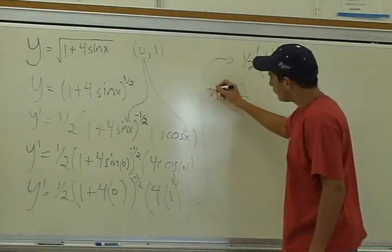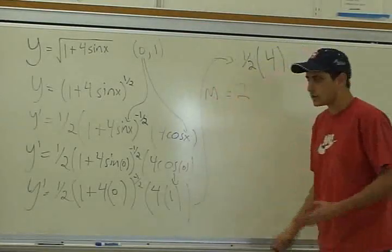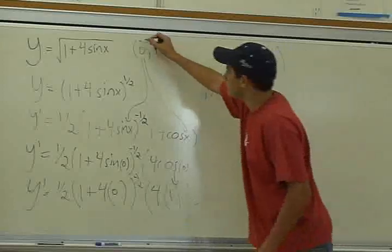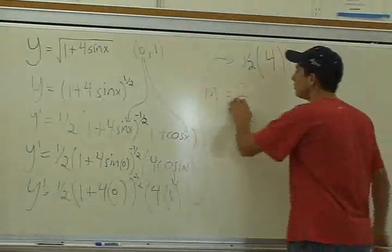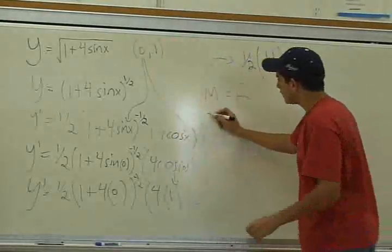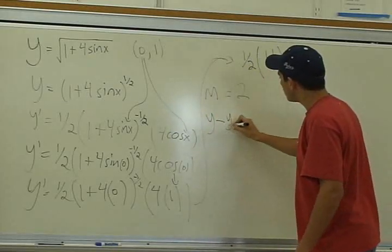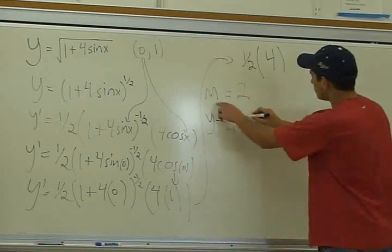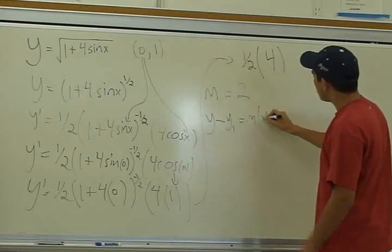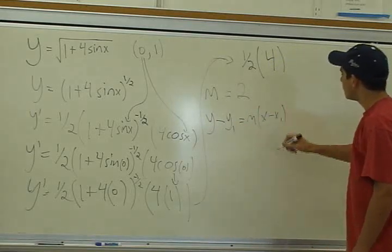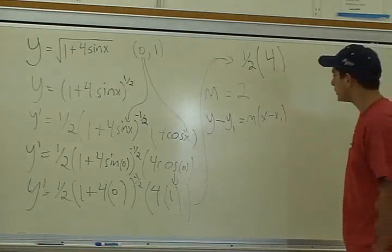So this is a part of what we need to find the equation of the tangent line. The other part is, of course, the actual point. So we've got the slope and the point. All we have to do is plug it in the formula, the point-slope formula, which is y - y1 = m(x - x1). This is a basic algebra formula to find the line.